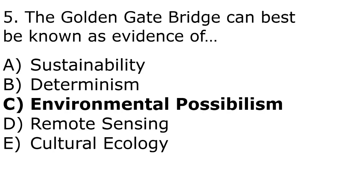The correct answer to this question is C, environmental possibilism. Environmental possibilism says yes, the environment has limitations, but humans can overcome these limitations — anything is possible. That's the difference from B, determinism, which says the environment has limitations and humans cannot overcome them; human actions are influenced by the environment. Sustainability is about using resources carefully for future generations, which has nothing to do with the Golden Gate Bridge. The bridge allows people to get from point A to point B over water — we're overcoming the challenge of water. That's environmental possibilism.